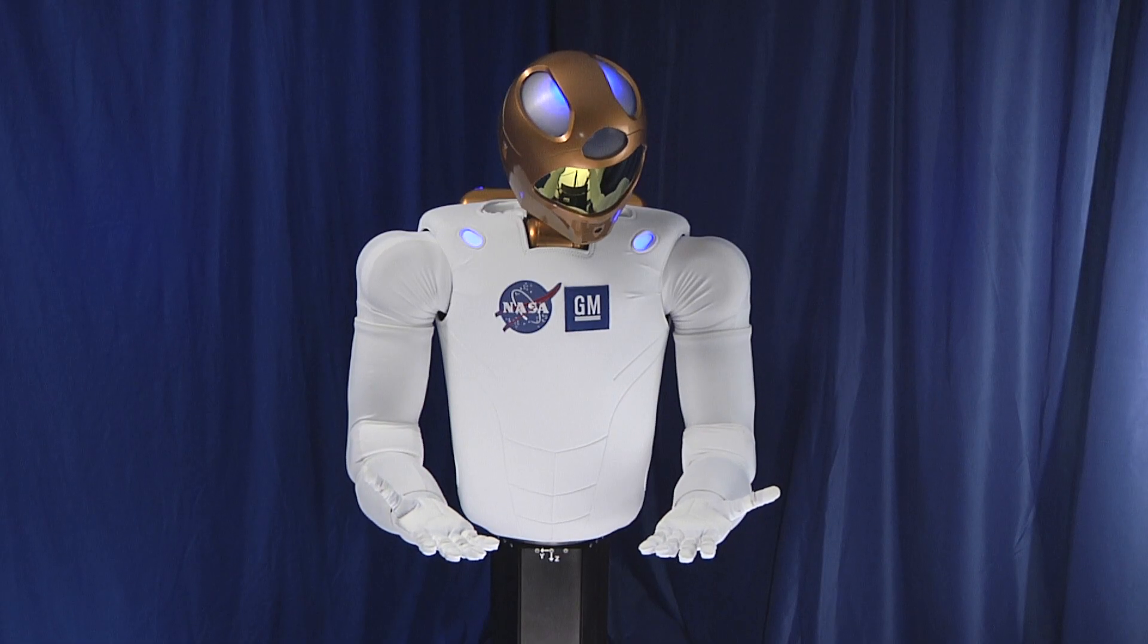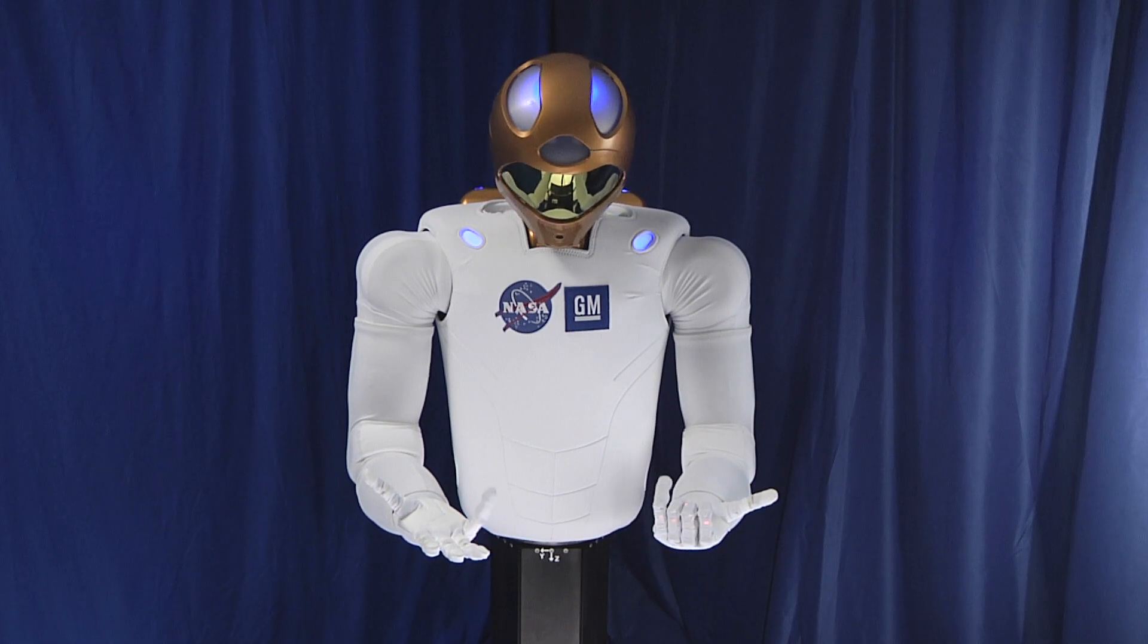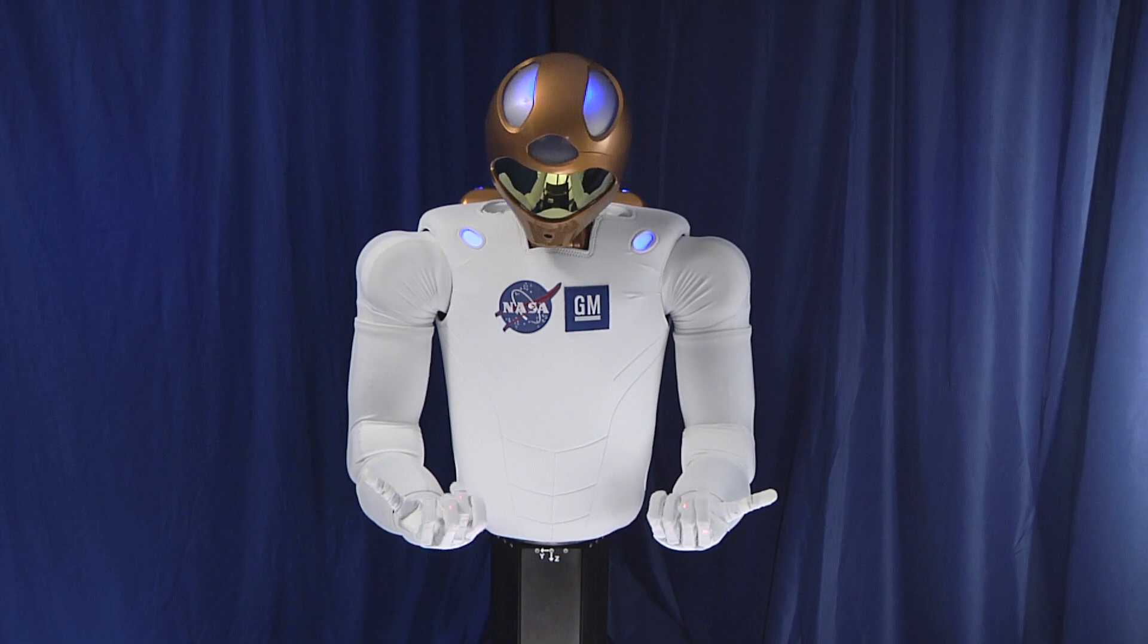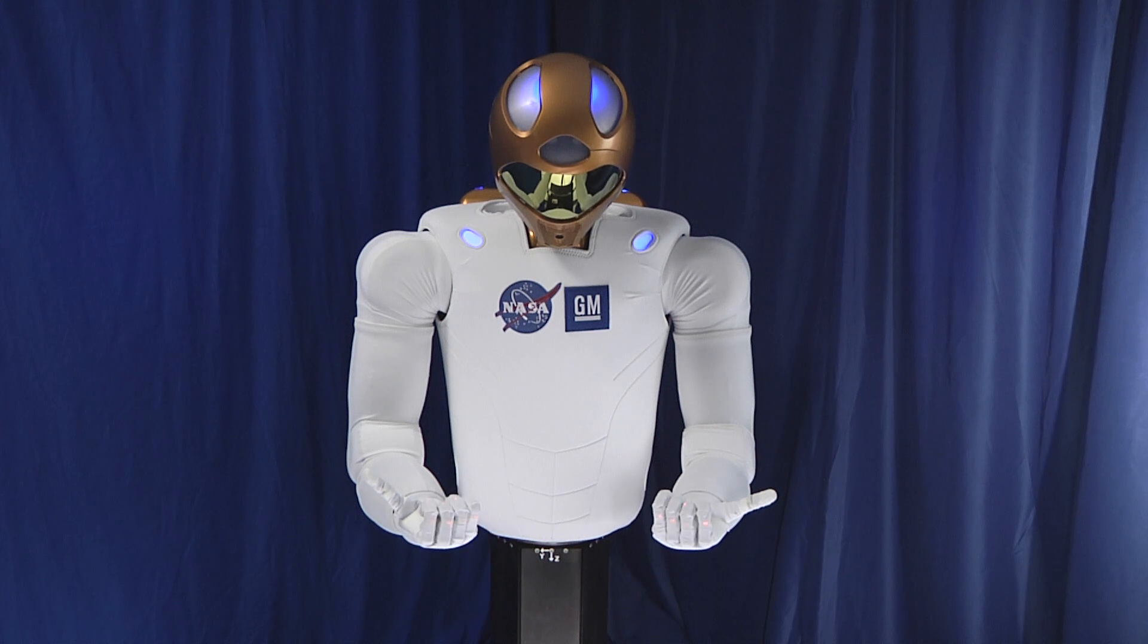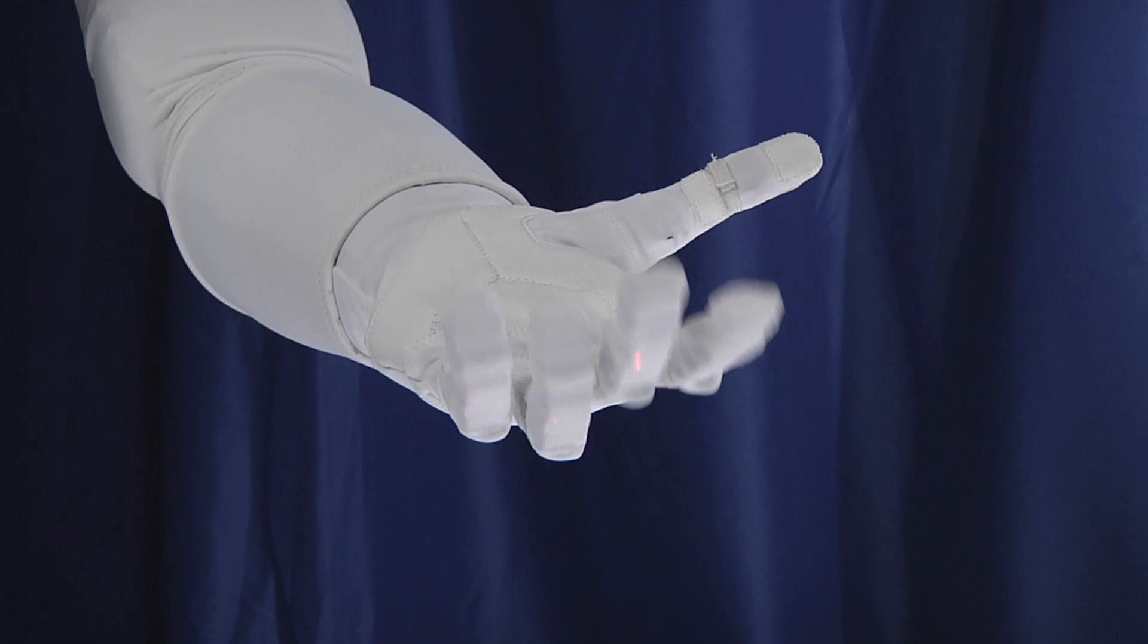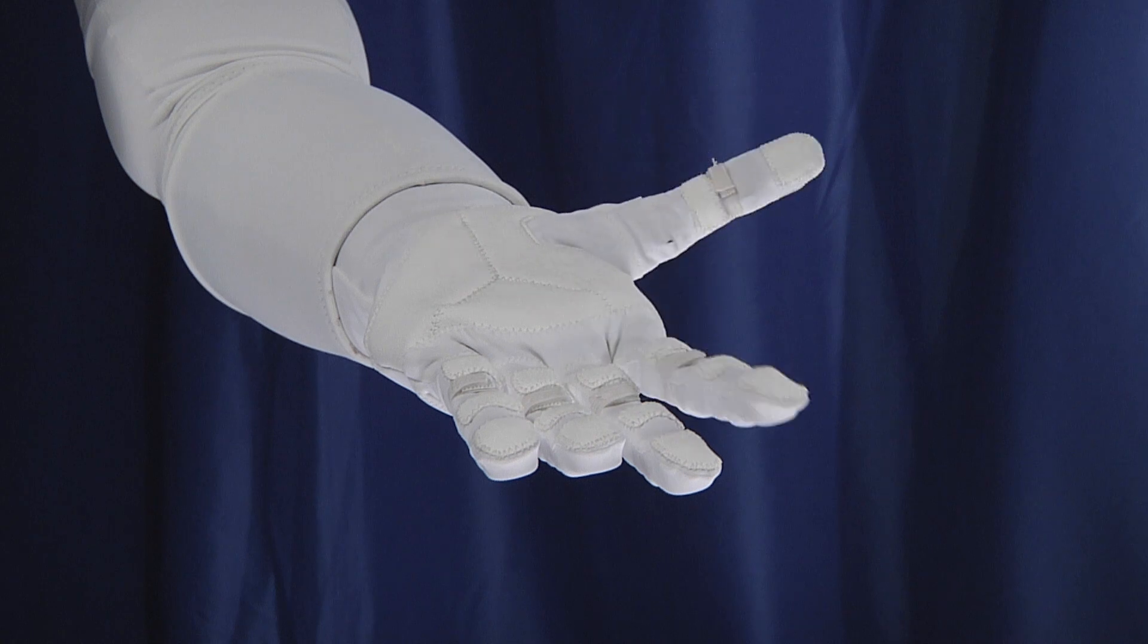Starting with R1, we went after both the hands and arms. They give you a workspace and the dexterity that's very similar to a human. When we went to R2, we increased that. We increased the speed at which we could perform tasks and we increased the level of dexterity so that we can even perform more tasks than the original R1 could.